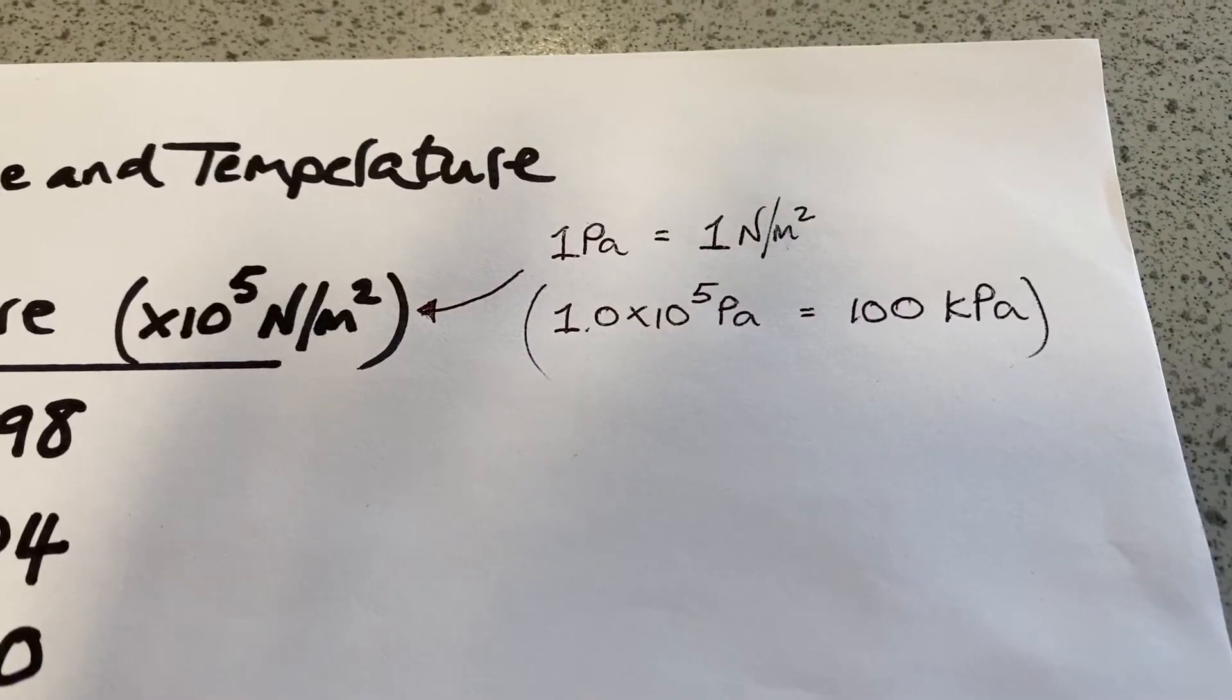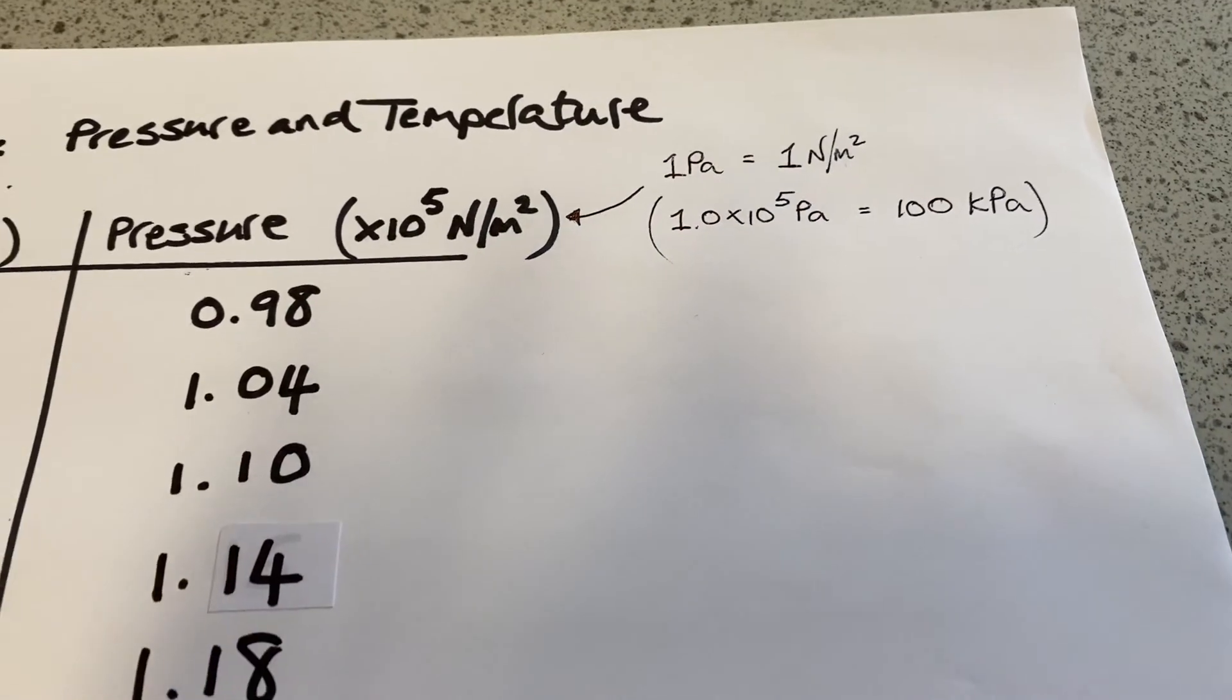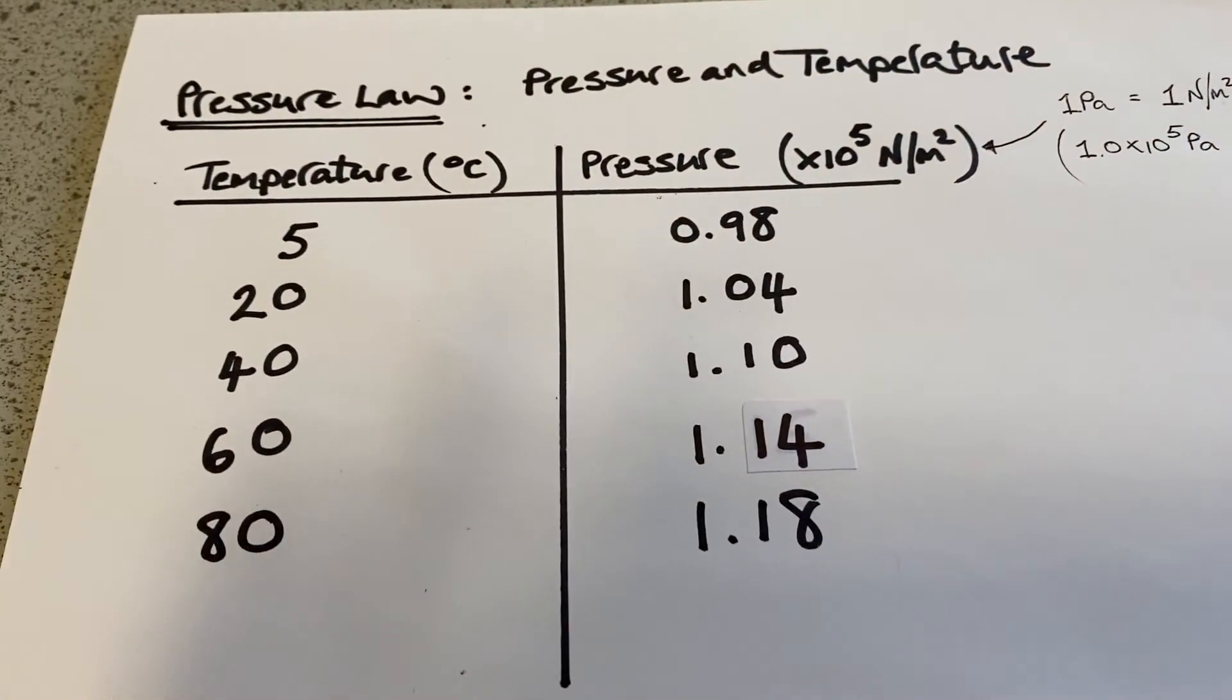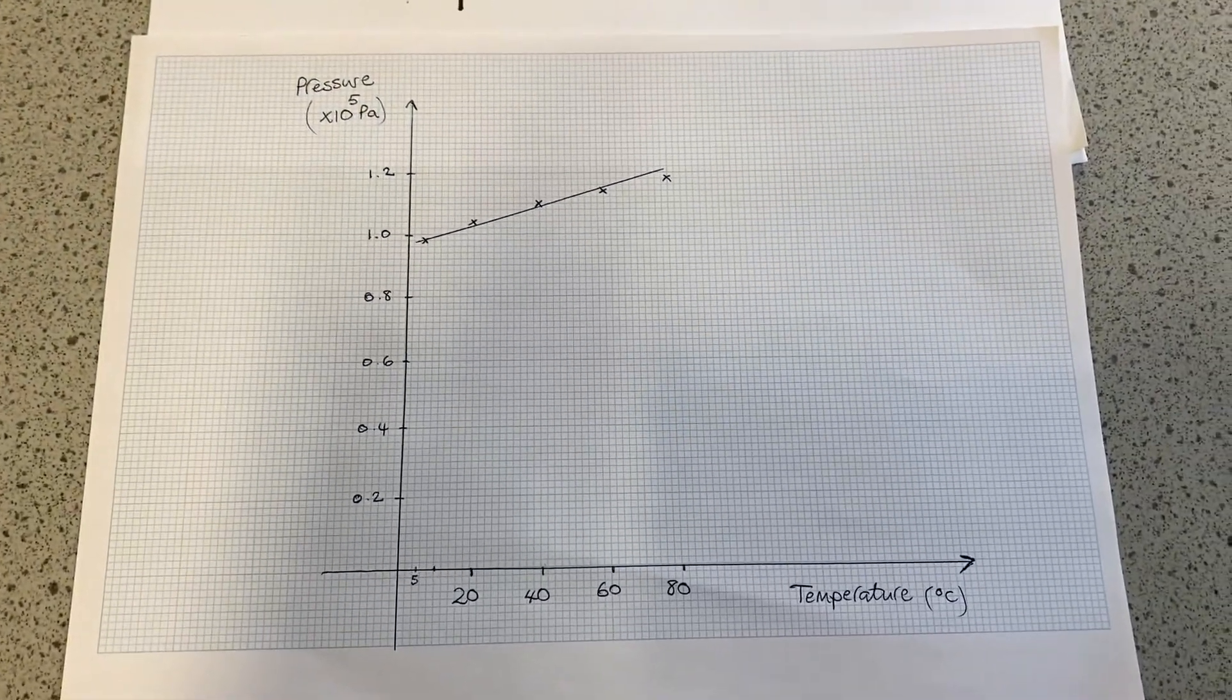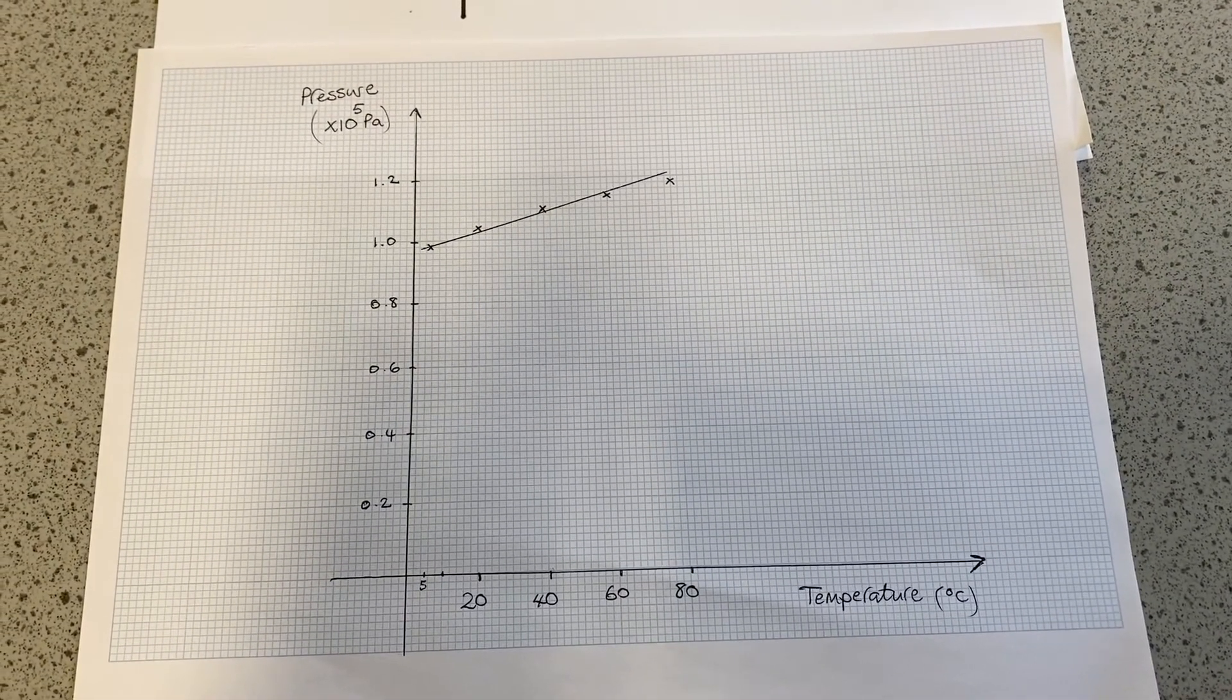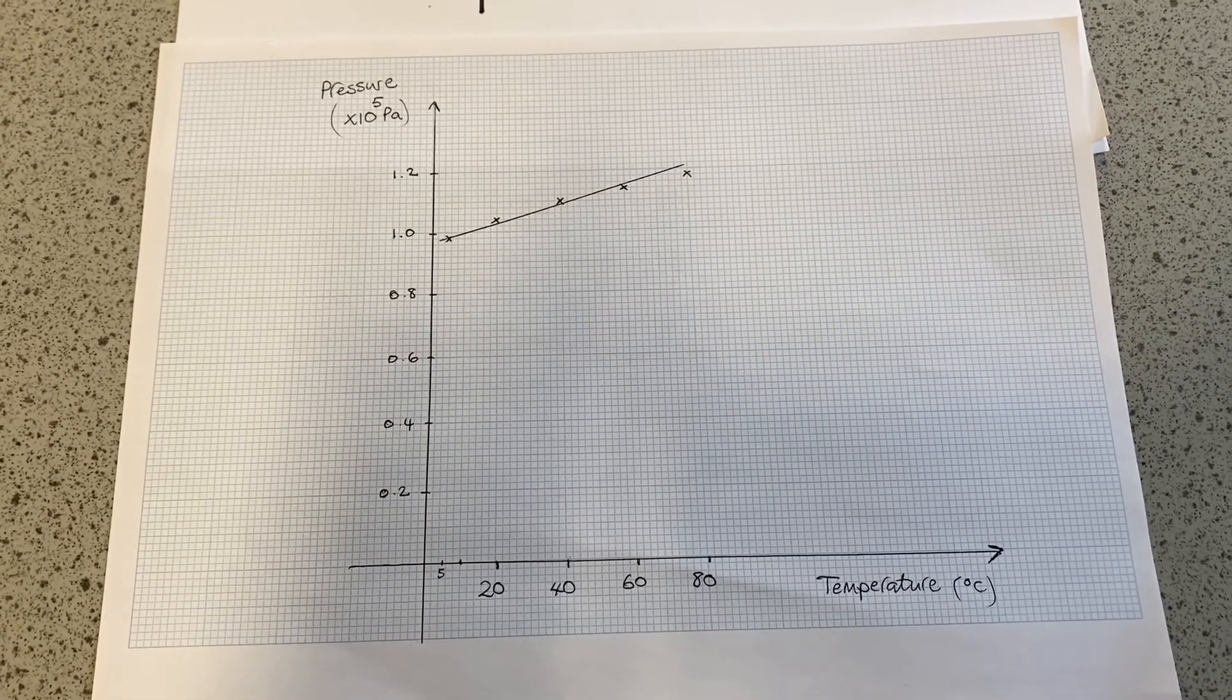Okay, don't forget that 1 pascal is the same as 1 newton per square metre, and our scale in this case was reading in times 10 to the 5 pascals. So make sure my axes are labelled correctly on the graph. And there's a graph of our results, as the temperature goes up the pressure goes up.